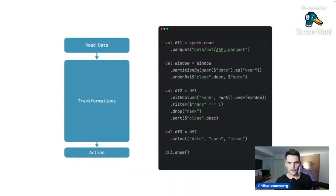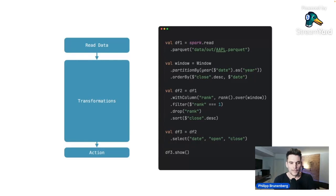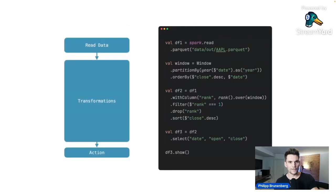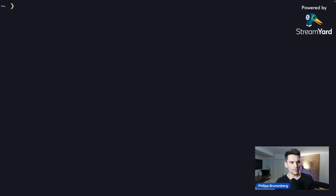Every Spark application we write has the same structure: first we load some data from a source, then we apply transformations — like transforming columns, grouping, or joining — which don't trigger execution on the cluster. Finally we call an action on the resulting DataFrame, which actually triggers the planning, code generation, transformation into the RDD world, and execution on the cluster. That's the distinction between transformations and actions in Spark applications.